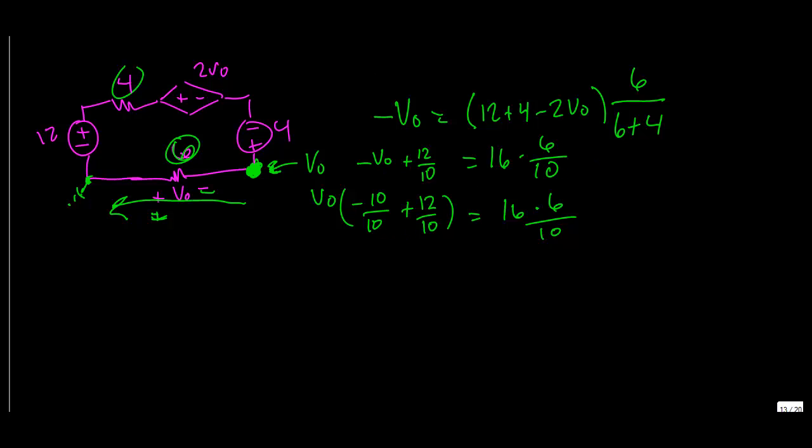Tens can cancel here. So then you get minus, so then you have 12 minus 10 is 2, which is equal to 16 times 6. There's a VO here. VO times 2. And then VO is actually equal to 16 times 6 divided by 2 is 3. So 16 times 3, which is 48 volts. So that's, to me, that's the easier way.